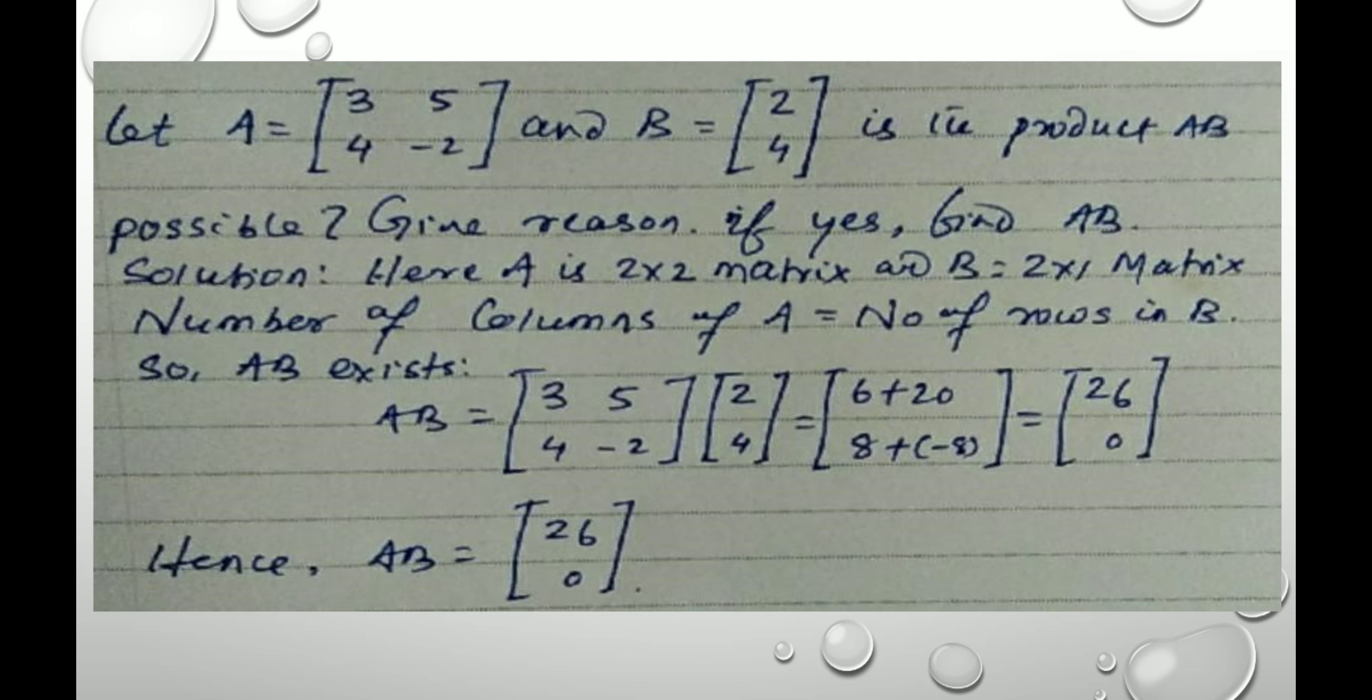The next question, let A is equal to 3, 5, 4, minus 2, and B equal to 2, 4. Is the product AB possible? It is asking whether the product of the matrices A and B is possible or not. Give reason, if yes, find the resultant matrix AB, solution.